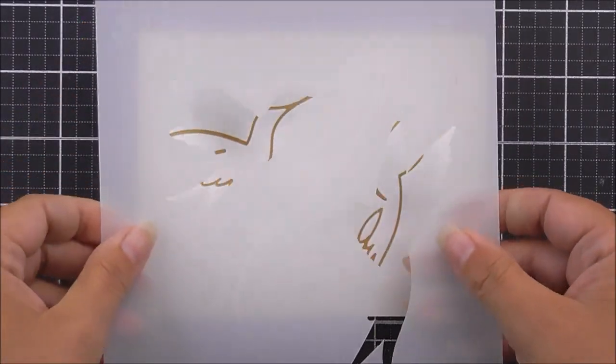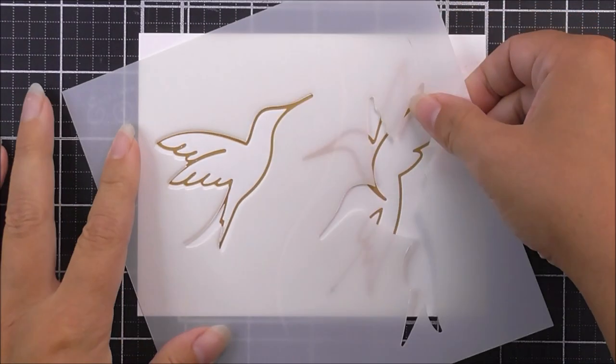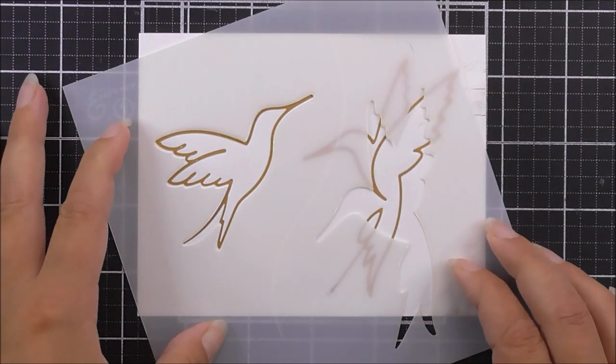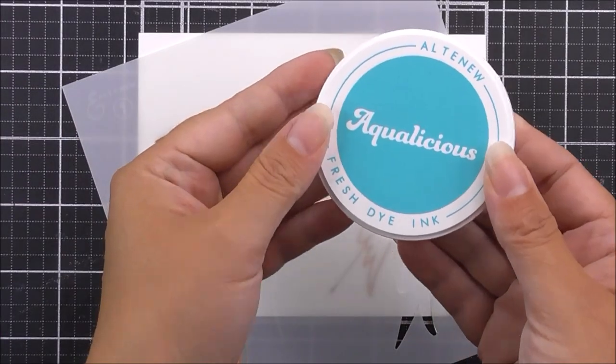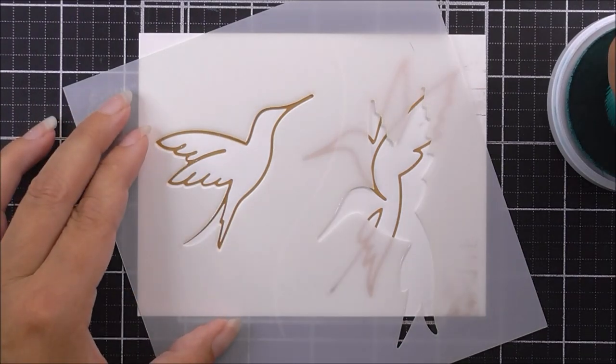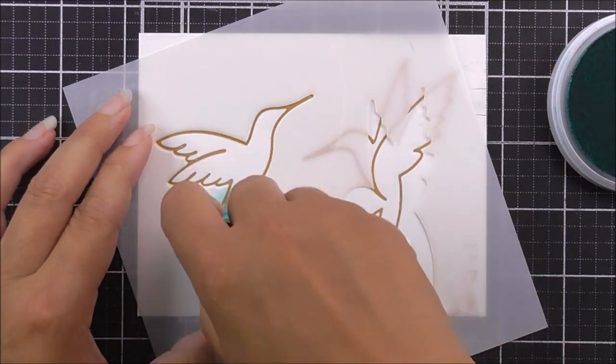I'm going to use the stencil to add in some color. We have both of the images on this one stencil here. All I'm going to do is place the stencil around the foiled image and add some ink through the stencil to color the image underneath.